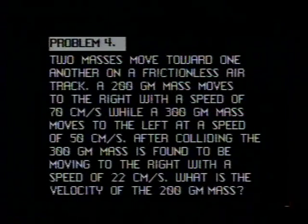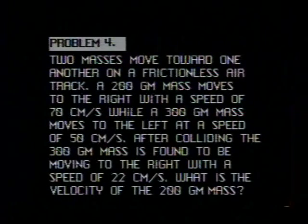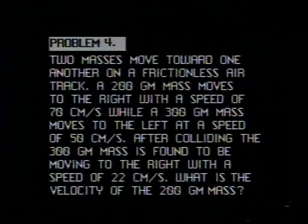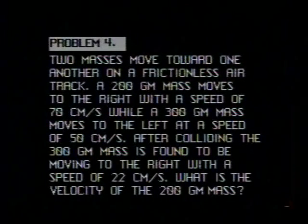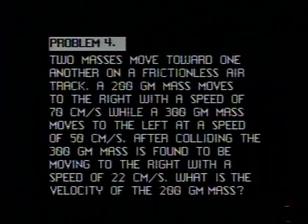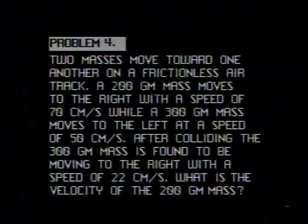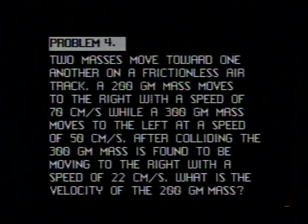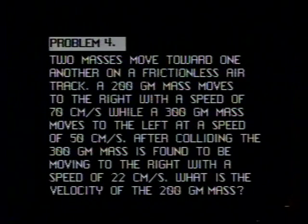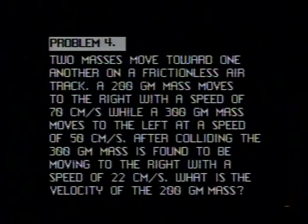Problem number 4 reads: two masses move toward one another on a frictionless air track. A 200 gram mass moves to the right with a speed of 70 centimeters per second, while a 300 gram mass moves to the left at a speed of 50 centimeters per second. After colliding, the 300 gram mass is found to be moving to the right with a speed of 22 centimeters per second. What is the velocity of the 200 gram mass?